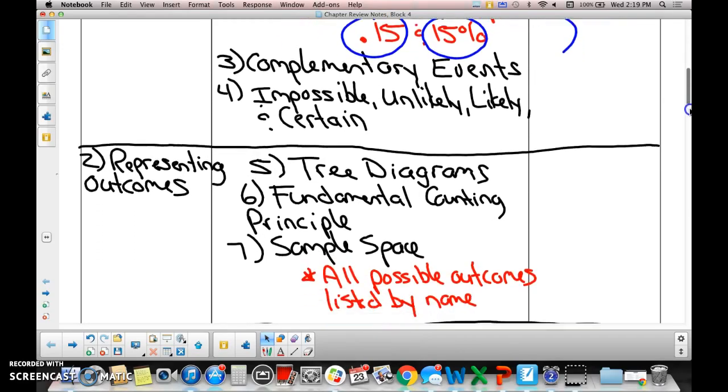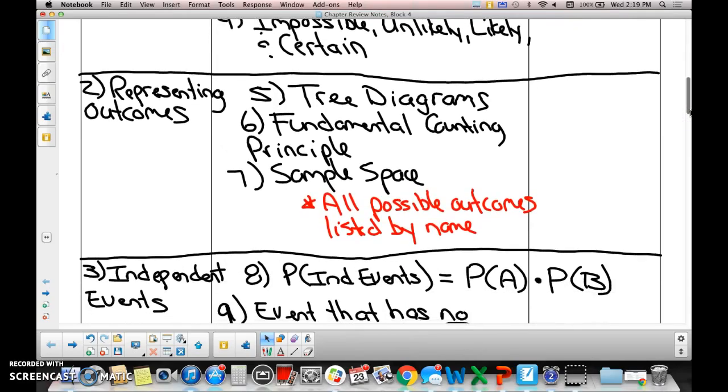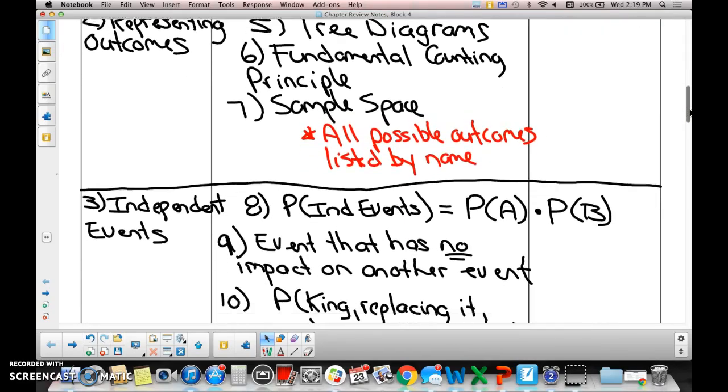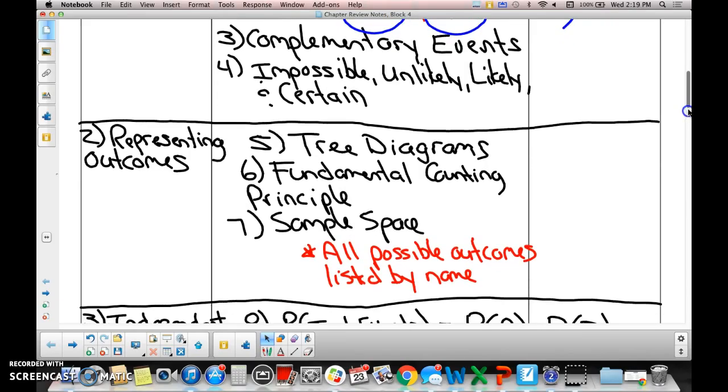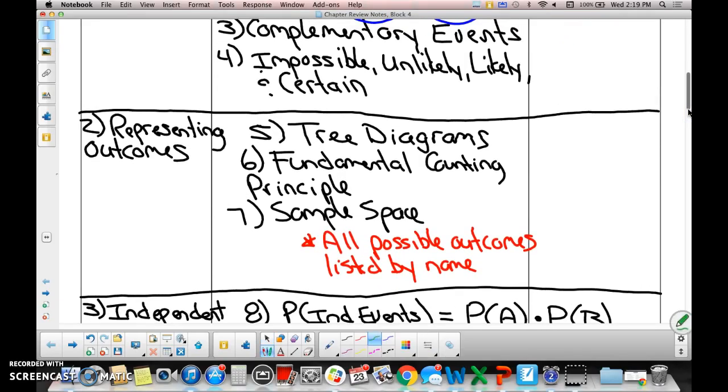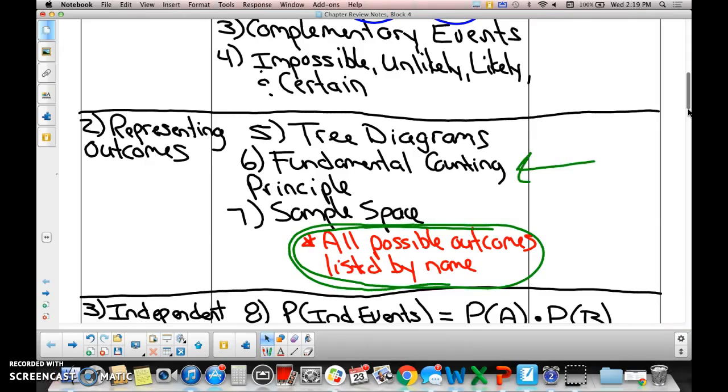Tree diagrams - you should be able to draw a tree diagram based on information given to you, and then sample space. All possible outcomes listed by name. You actually have to list them by name to be considered a sample space. The fundamental counting principle determines the number of outcomes.